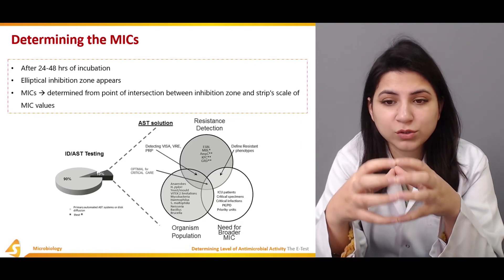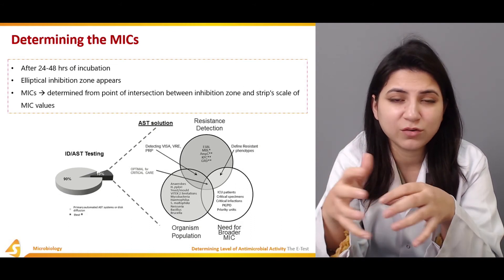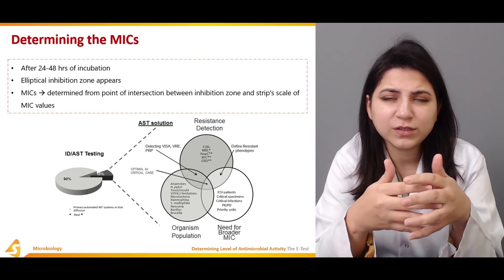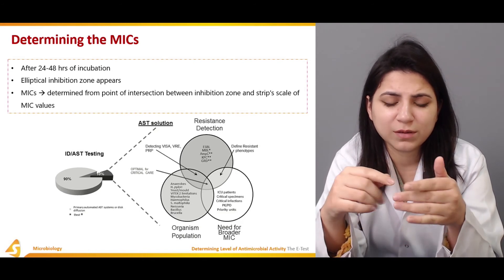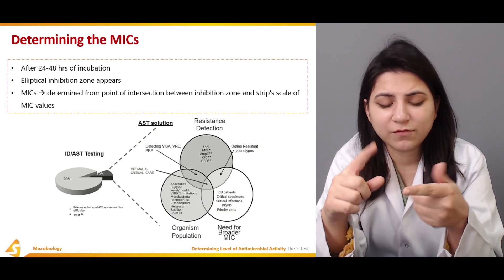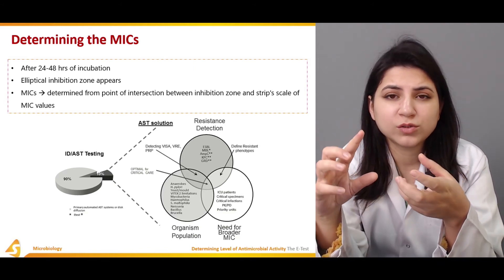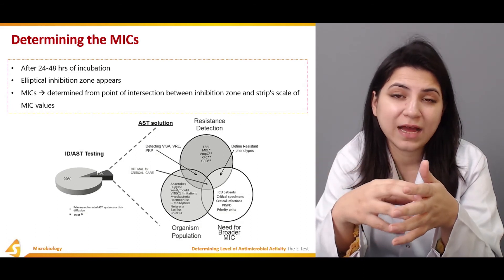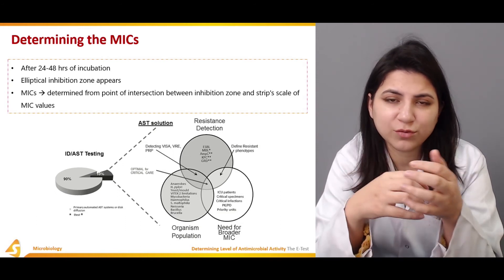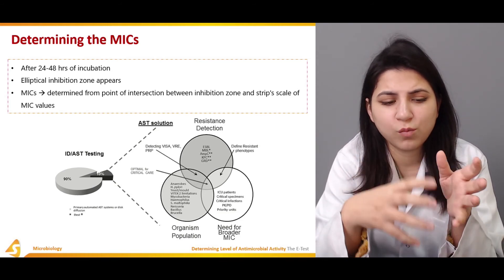The E-test also shows resistance detection, meaning that resistant phenotypes of particular pathogens can be determined. There are different automated systems. In both the E-test and disc diffusion test, we identify the susceptible zone, resistance detection, the organisms against which the test can be used, and how certain tests can be applied for critical patients or how to develop a broader MIC for a type of patient.